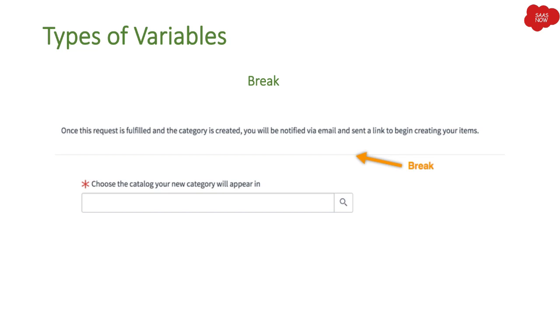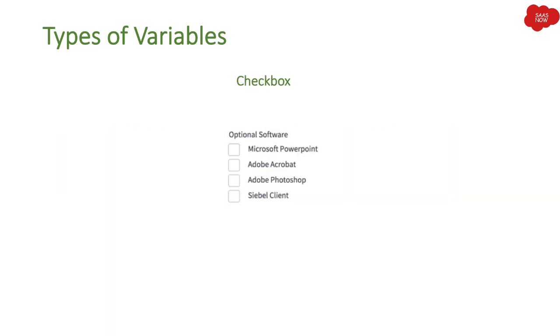Starting with the first variable: Break. The Break variable adds a line on your catalog form. If you want to add a dividing line, you can utilize the Break variable.